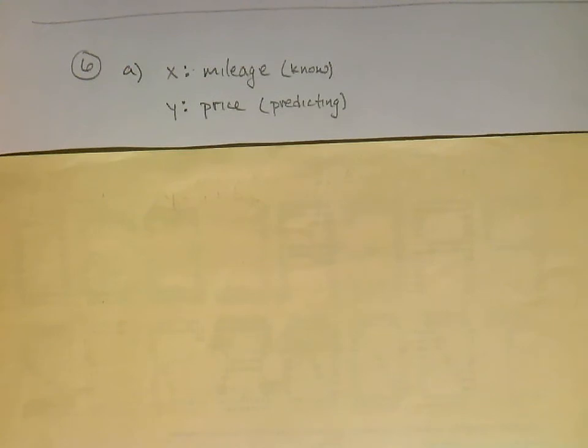Which one explains the other? Does the mileage explain the price, or does the price explain the mileage? If I can change the mileage, I can put more miles on my car, and that influences how much it's worth. But I can't change the price, and then somehow that makes the mileage go down. There you go.